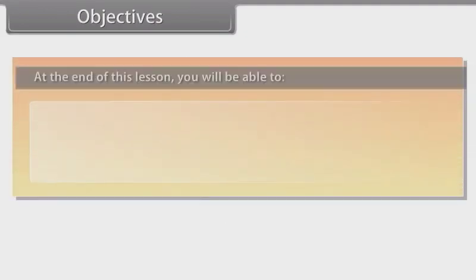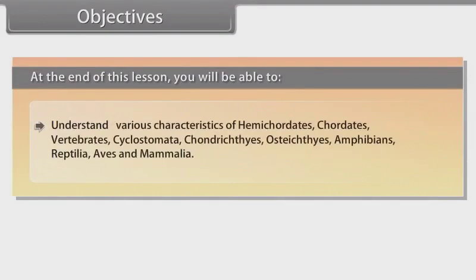Objectives: At the end of this lesson, you will be able to understand various characteristics of hemichordates, chordates, vertebrates, cyclostomata, chondrichthyes, osteichthyes, amphibians, reptilia, aves and mammalia.